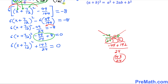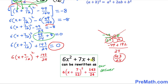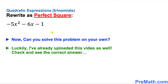Our last step: disregard the 0 — we no longer need it. So 6x² + 7x + 8 can be rewritten as the perfect square form 6(x + 7/12)² + 143/24. Here is your assignment: can you rewrite a given trinomial as a perfect square on your own? You can pause the video and take your time. I have already uploaded the answer video — go check it out. Thanks for watching, and please don't forget to subscribe to my channel for more exciting videos.